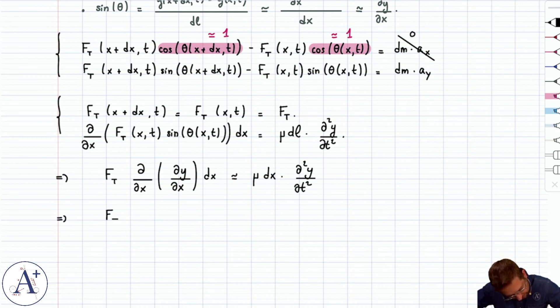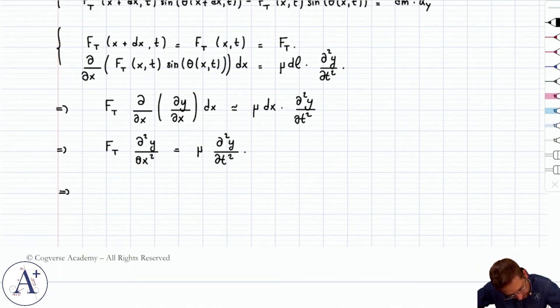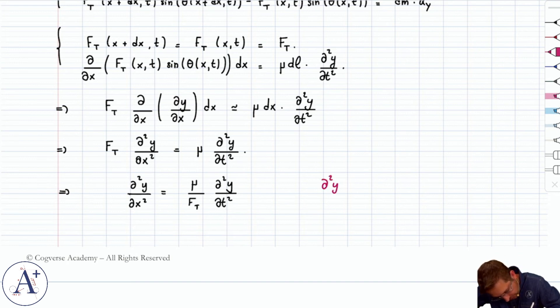So we get F_T ∂²y/∂x² dx simplifies to μ ∂²y/∂t². We can rearrange that because we want to put this in the form of the wave equation. So this is ∂²y/∂x² equals μ/F_T ∂²y/∂t². Recall that the standard form for the wave equation is a partial differential equation that looks like this, where c is the celerity of your wave, in other words, the speed at which the wave propagates.